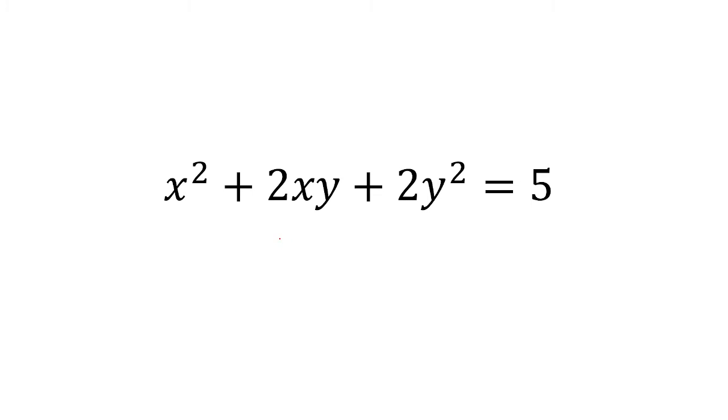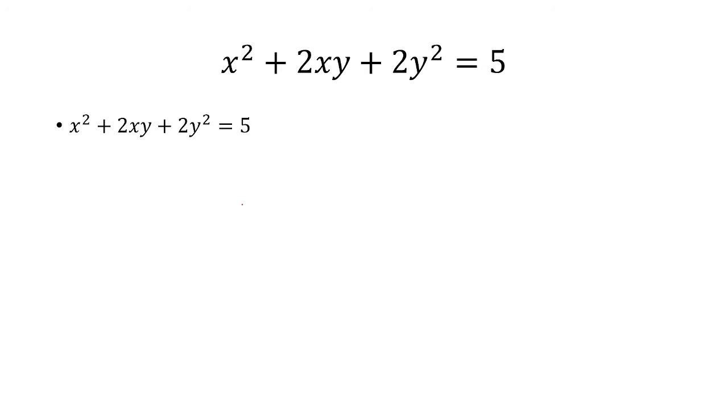In this video, I'm going to take the second derivative of x squared plus 2xy plus 2y squared equals 5 at the point 1 comma 1. So let's take the derivative with respect to x first.